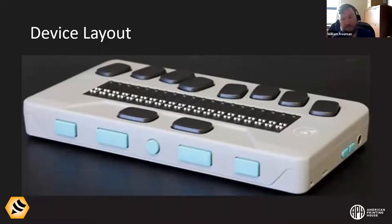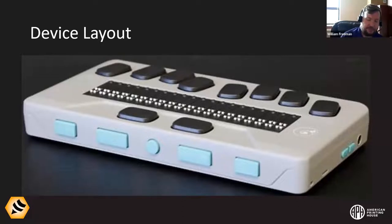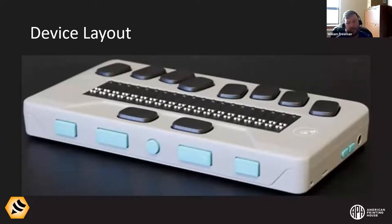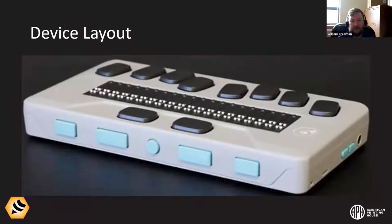On the front edge of the device you've got the thumb keys and the home button. The home button is that round button in the very front and middle of the front edge, right between the two space bars but down on the front edge. You can think of the home button as your escape hatch — if you're ever lost or confused, press the home button and it will always take you back to the main menu so you can reorient yourself.